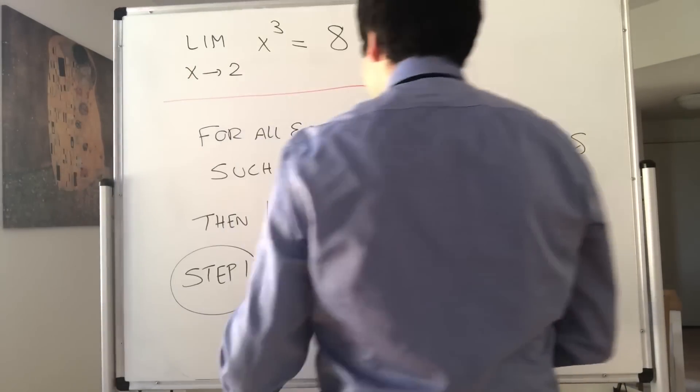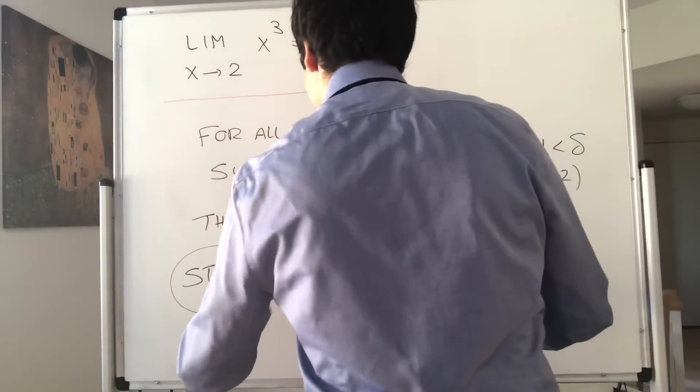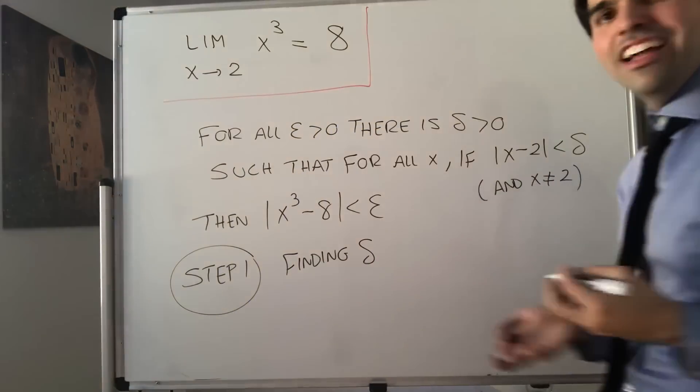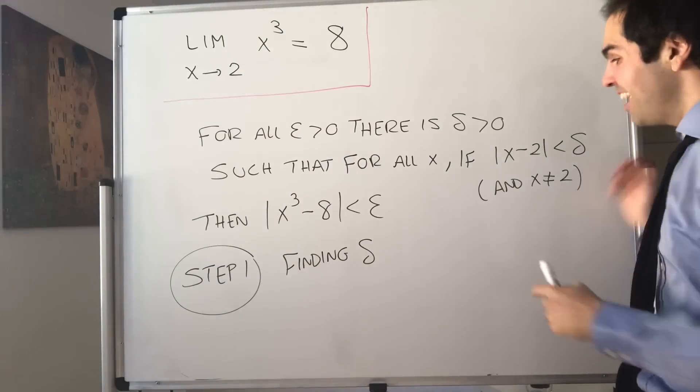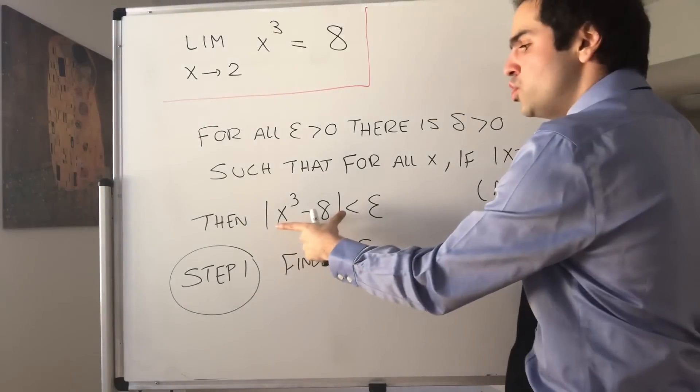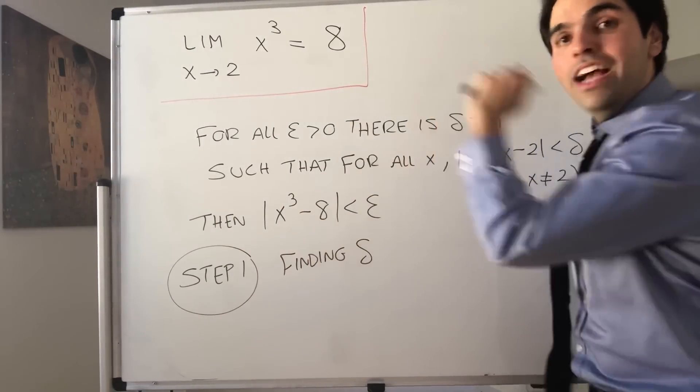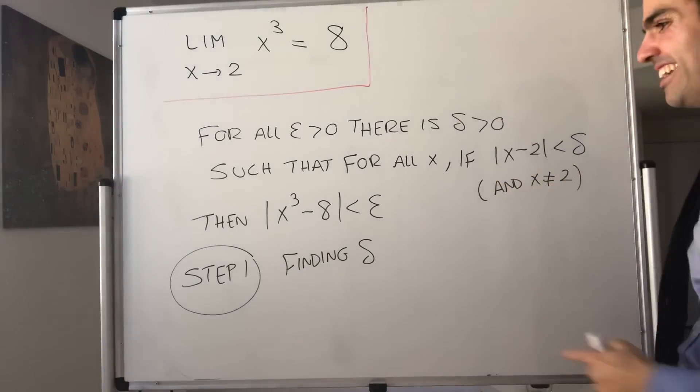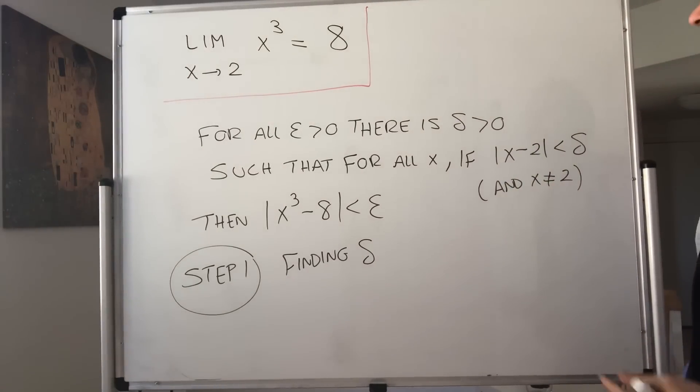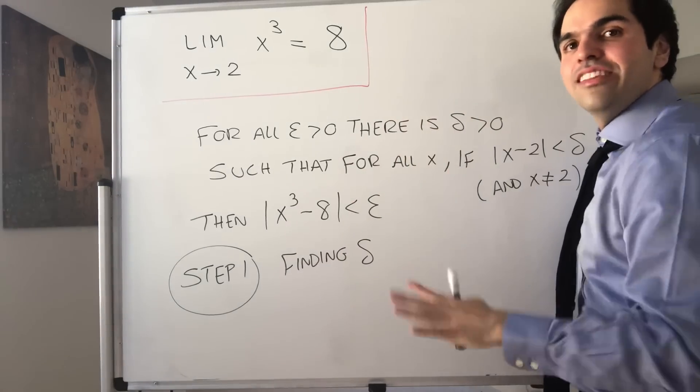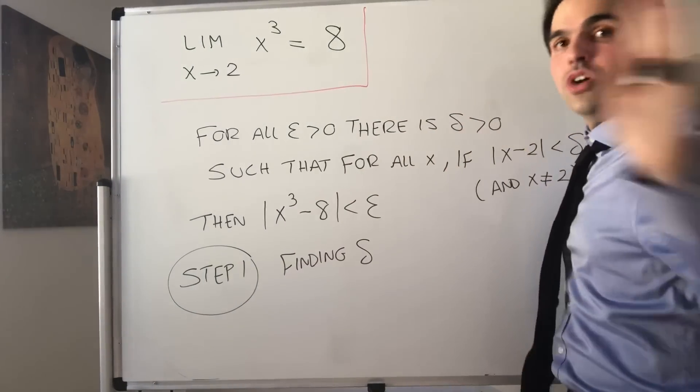Step one, which is finding delta. Like finding Nemo, but for delta. And it seems a bit paradoxical, but you start with this and try to fish out some delta. It seems paradoxical as I said, but in the end we'll do the correct proof.